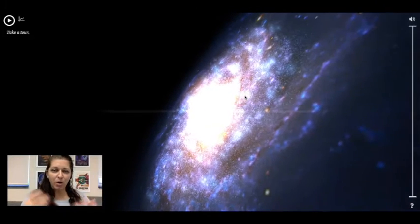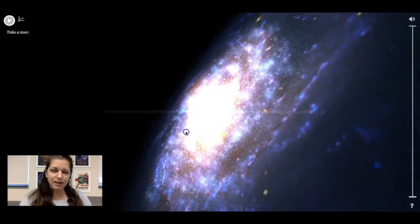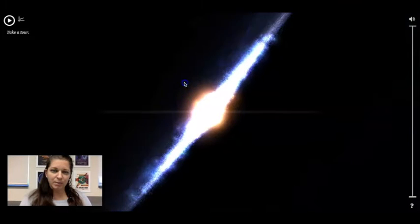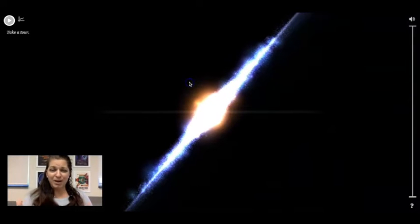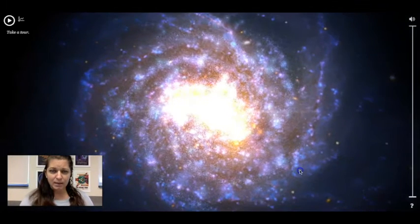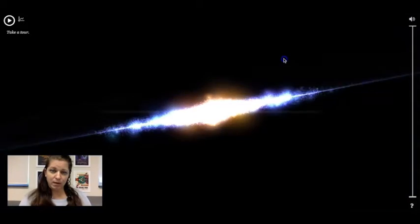You can zoom all the way out and see exactly where we are in the Milky Way galaxy. This is a great tool to teach about galaxies as well because it gives you an idea of what the shape of our own galaxy is. So we live in a spiral galaxy. This is what it looks like from a bird's eye view but then this is what it looks like edge on.